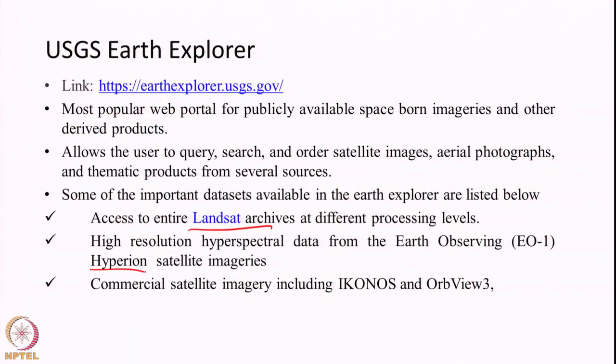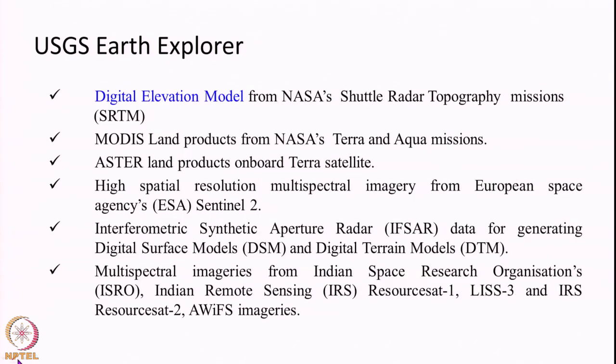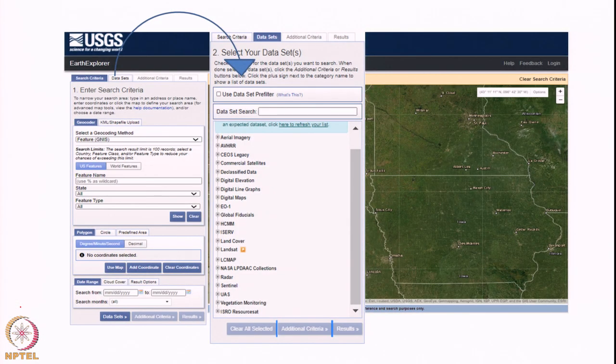One of the most commonly downloaded datasets from this portal is the Landsat series of satellites, which is primarily maintained by USGS. Apart from Landsat, we can also download data from Hyperion (a hyperspectral sensor), commercial satellite images like IKONOS and OrbView-3, digital elevation models, MODIS, ASTER, and even Indian remote sensing satellites like ResourceSat-1 and ResourceSat-2. Many different data products are available through this portal.